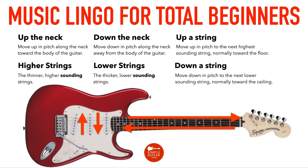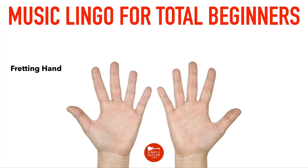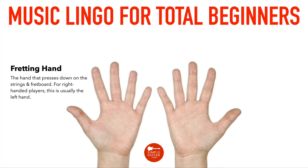Now let's look at your hands. When we're playing guitar, we use two hands. Normally we have your fretting hand, which is the hand that presses down on the strings and fretboard. For right-handed players, this is usually the left hand. For lefties playing left-handed, it's going to be your right hand. Some left-handed people will play guitar right-handed, in which case the left hand is used for fretting.